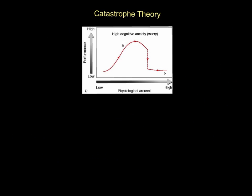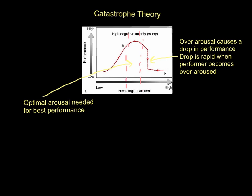The next theory is catastrophe theory. This is a version of inverted U — hence why we see a very similar pattern at the start. As arousal increases, performance gets better and better, up until we reach the zone of optimum functioning again. However, the difference between inverted U and catastrophe theory is that as arousal continues to increase, instead of a gradual fall in performance as in inverted U, there is a sudden, dramatic drop in performance. Optimal arousal is needed for best performance. If we go above that zone, the drop in performance is rapid when we become over-aroused. It is a version of inverted U, but there is a definite difference between them.